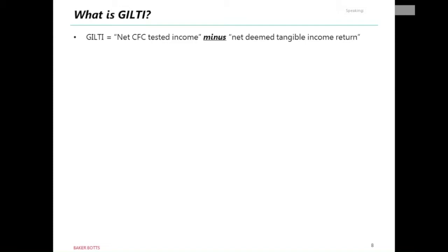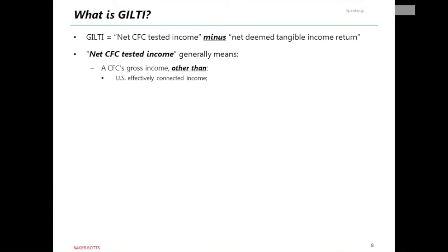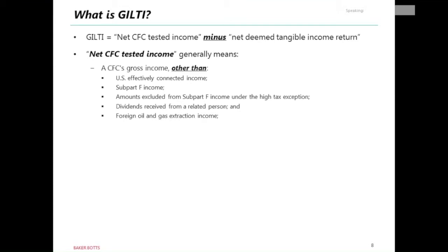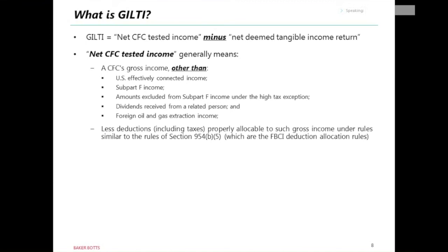GILTI is basically the net CFC tested income minus a net deemed tangible income return. Net CFC tested income generally means a CFC's gross income other than U.S. effectively connected income, subpart F income, amounts excluded from subpart F income under the high tax exception, dividends received from a related person, and foreign oil and gas extraction income — less deductions including taxes properly allocable to such income. GILTI captures a significant component of the income that most CFCs would typically earn.